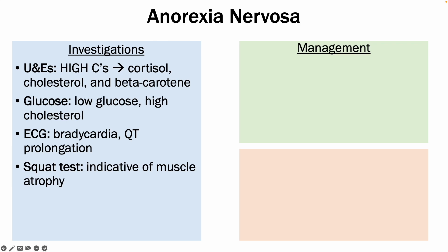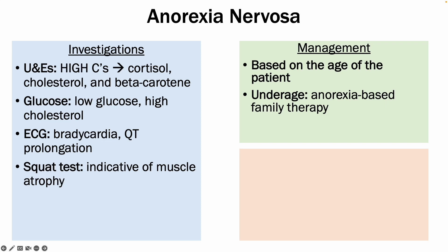In terms of management, it is based on the age of the patient. For those underage, you would use anorexia-based family therapy. For adults, you would use CBT-ED, or Cognitive Behavioural Therapy focusing on eating disorders, or MANTRA, which is the Maudsley Model of Anorexia Nervosa Treatment for Adults.